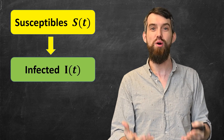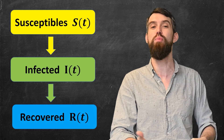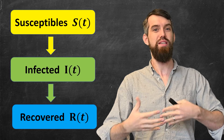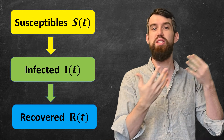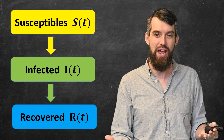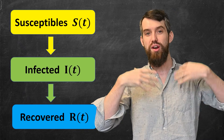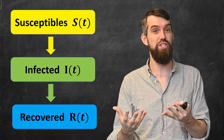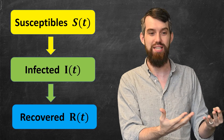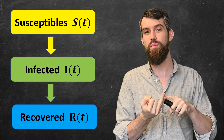Those who have the infected disease are going to transition at some point, hopefully, into a recovered status. As long as the death rate is small compared to the number being recovered, everybody is either susceptible — meaning they could get ill — or they're currently infected, in which case they could infect other people, or they've become recovered, in which case they can neither get this illness nor give it to somebody else.